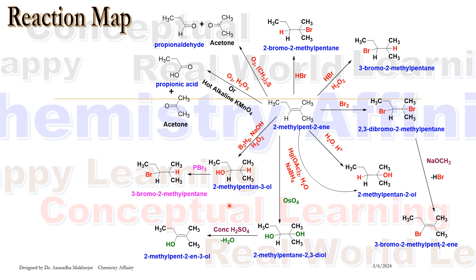When we treat 2-methyl pentane-3-ol with PBr3, OH is replaced with Br. So it follows a nucleophilic substitution mechanism.